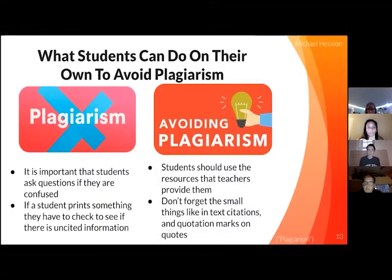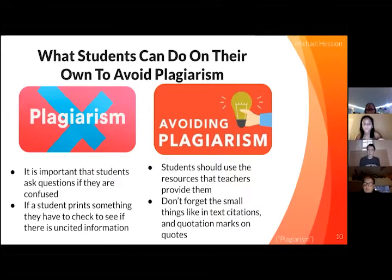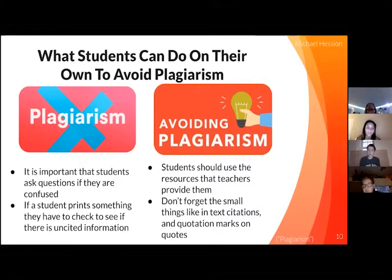What students can do on their own to avoid plagiarism. If a student gets confused, they should ask a teacher a question rather than trying to figure it out by themselves. If they try to do it by themselves, they might make a mistake and plagiarize. If a student ever uses printed sources, they have to make sure there isn't any uncited information. If a printed source doesn't have cited information, then the student might plagiarize if they use the source.